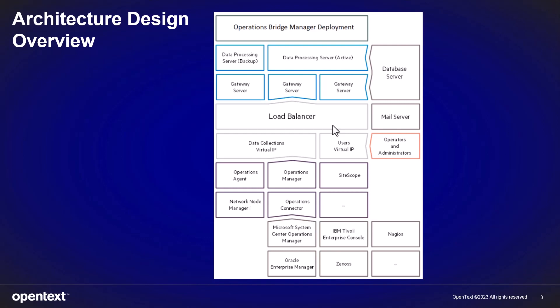The OBM load balancer provides two access points. The data collection's virtual IP, which is the virtual host name for the data collectors to access the gateway server, used when configuring the data collectors for communication with OBM. And the user's virtual IP, a virtual host name for accessing the OBM console web interface on the gateway server — the host name used by the OBM users.